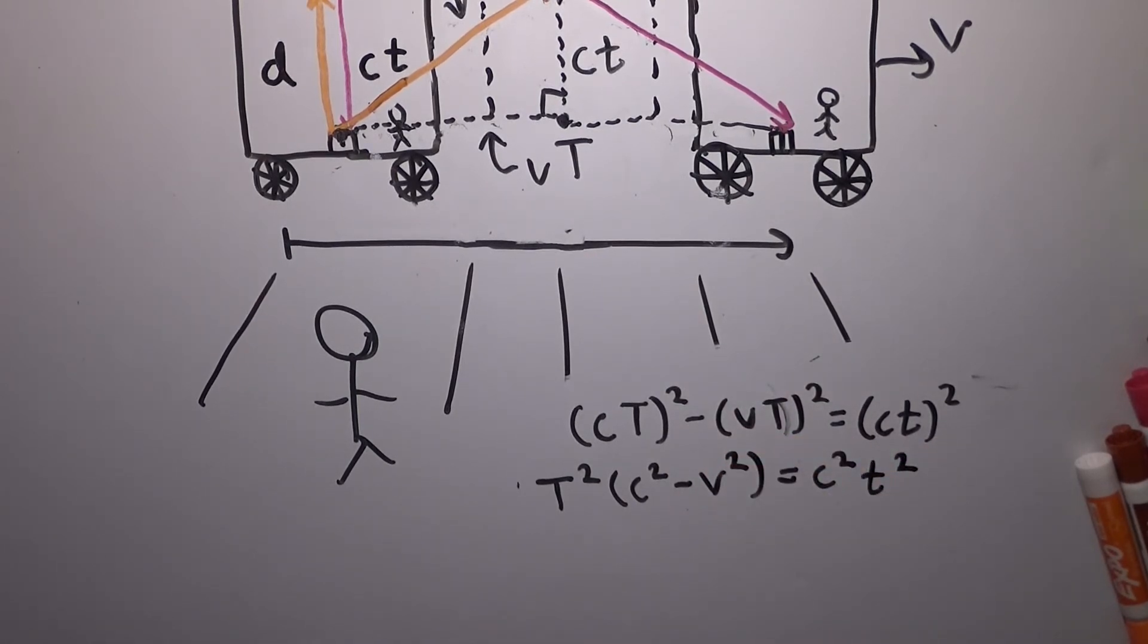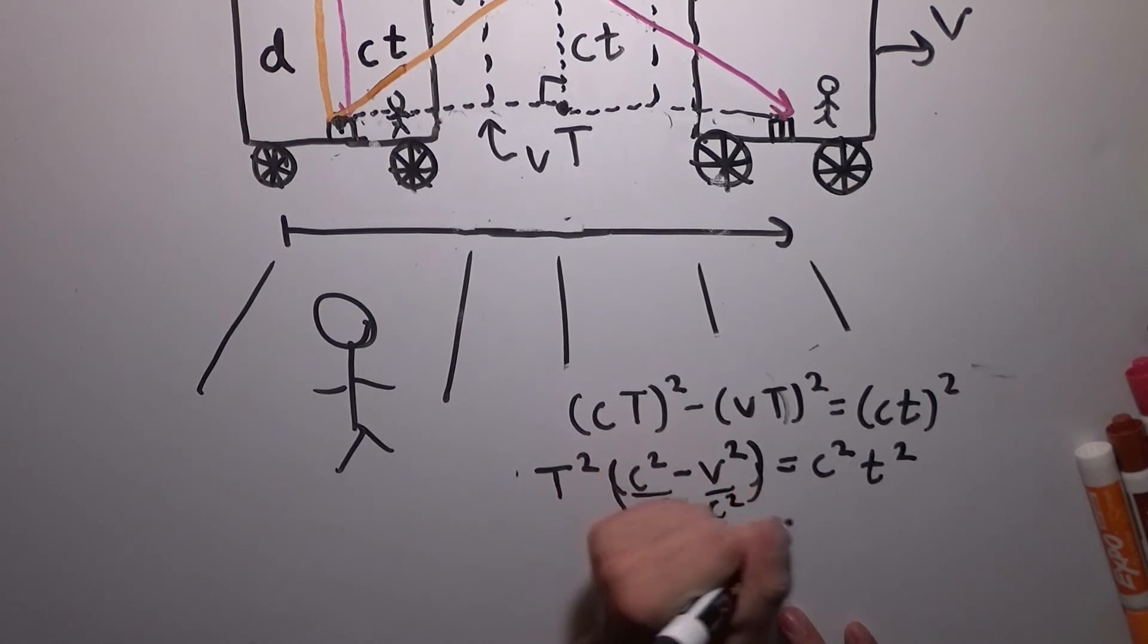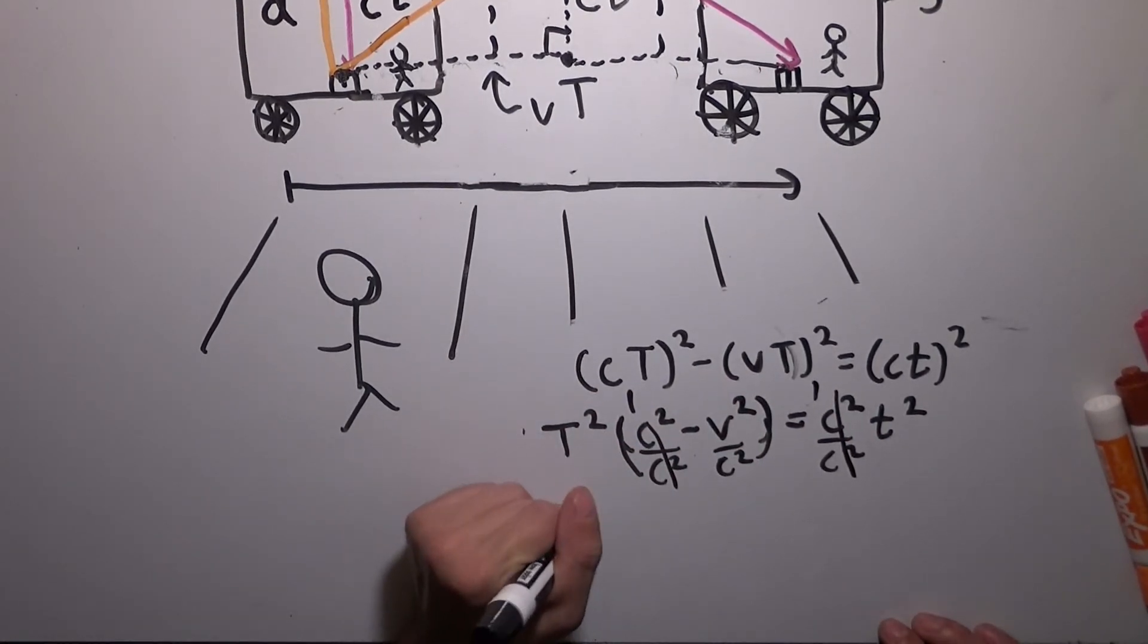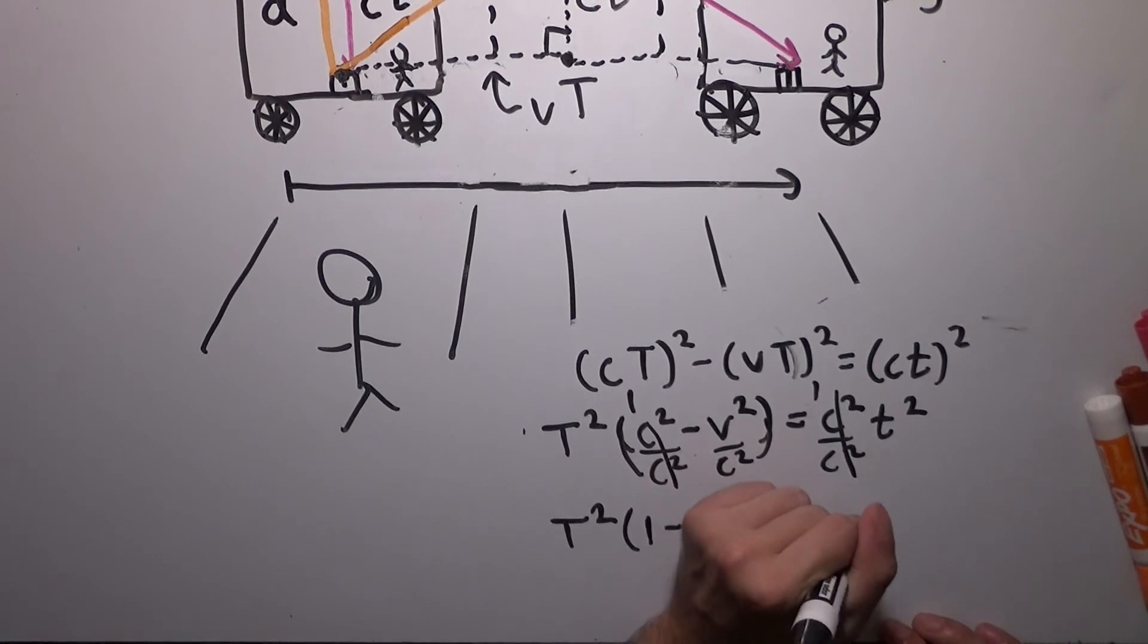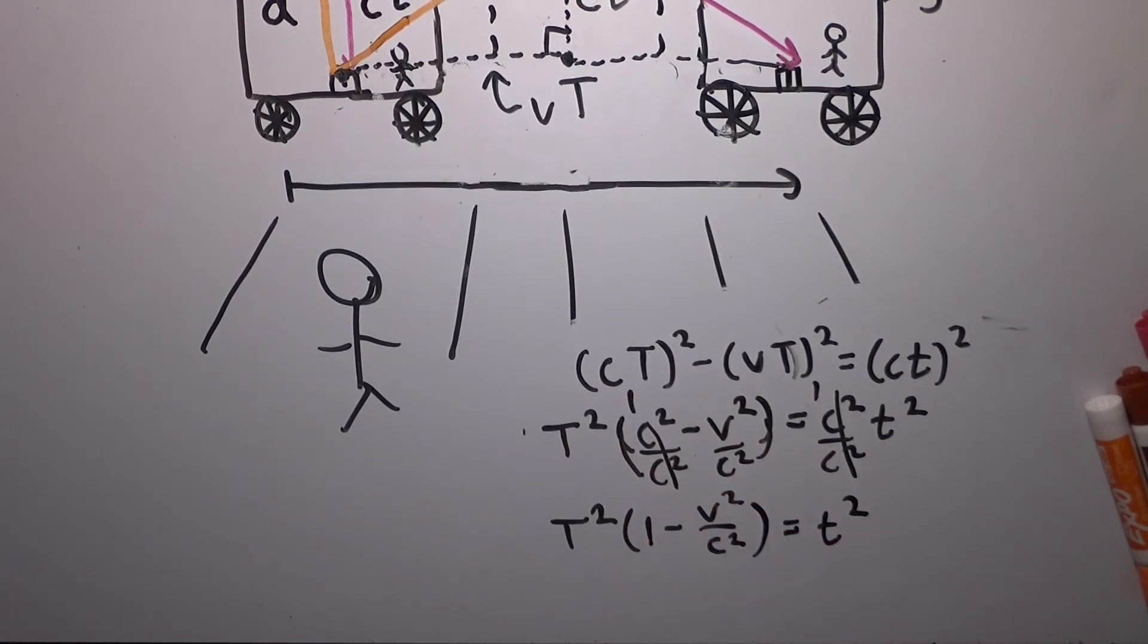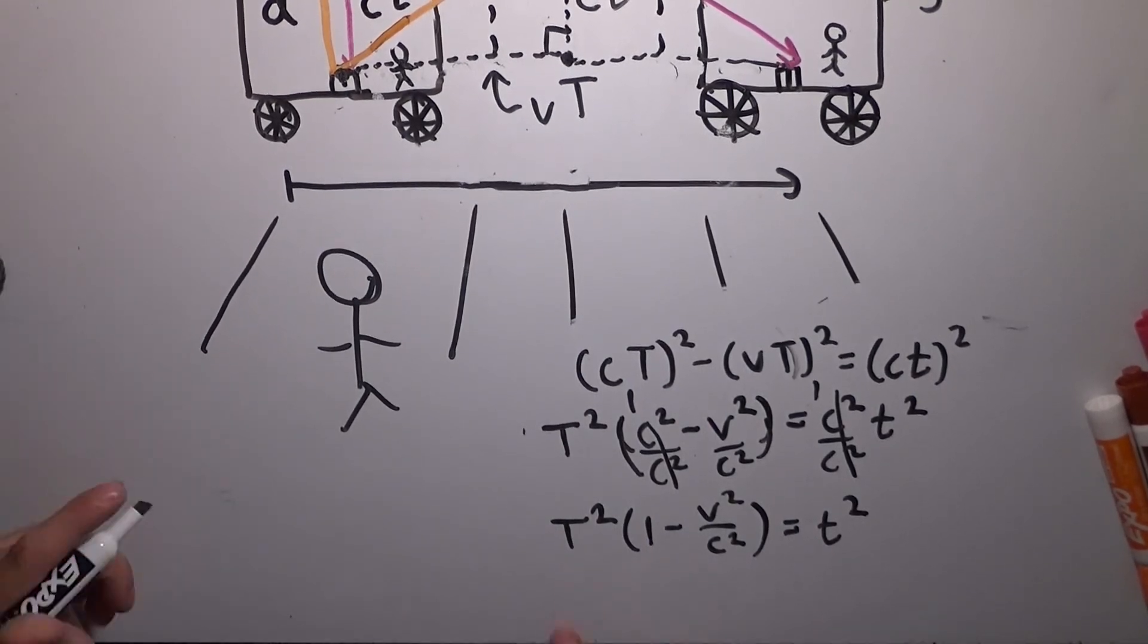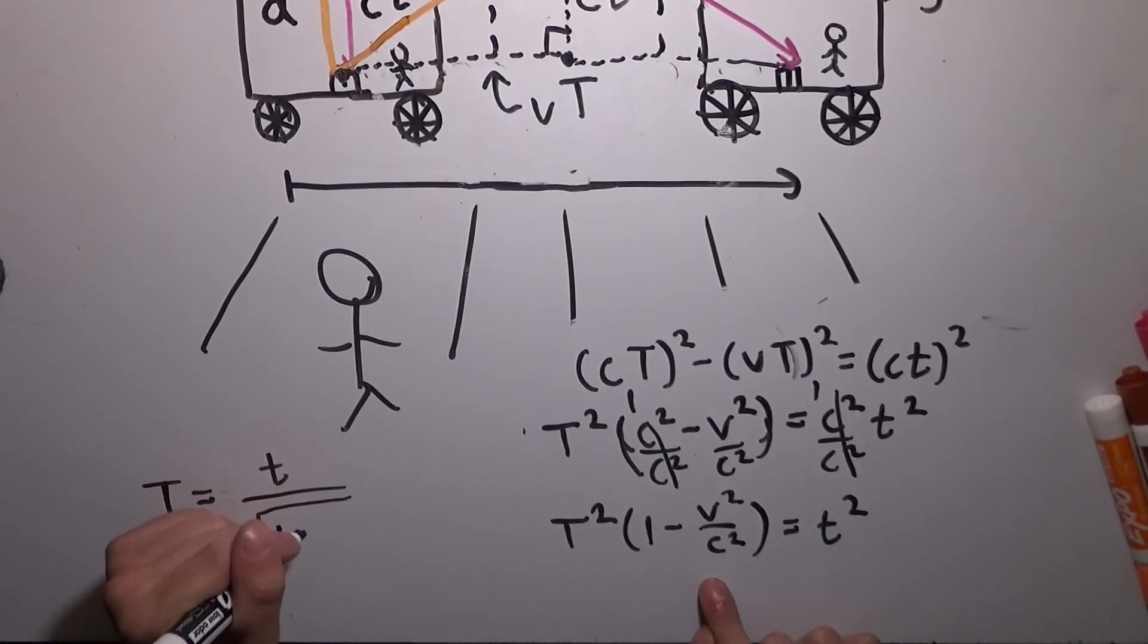We can do some more simplifications. We can divide both sides by C squared. And we'll end up with C squared over C squared minus V squared over C squared equals C squared over C squared times T squared. Like that, those C squareds become one, these C squareds become one. We end up with T squared times one minus V squared over C squared equals the original time T squared. Solving for big T, we get T, little t, is equal to big... I'm sorry, solving for big T, solving for big T, we get that big T is equal to little t divided by the square root of one minus the velocity of the train squared divided by the speed of light squared.